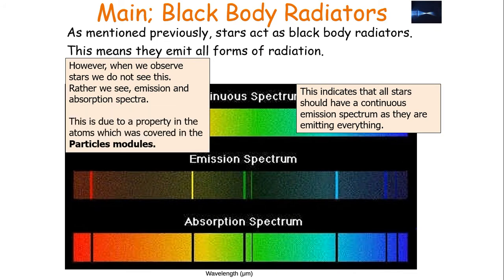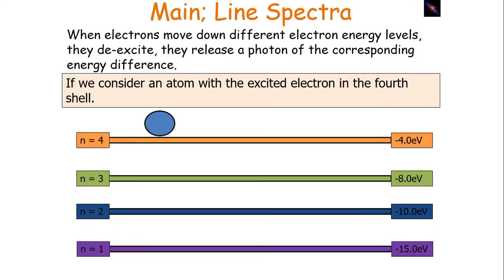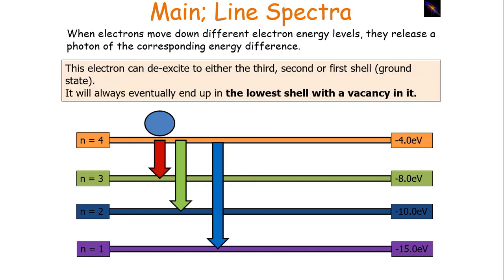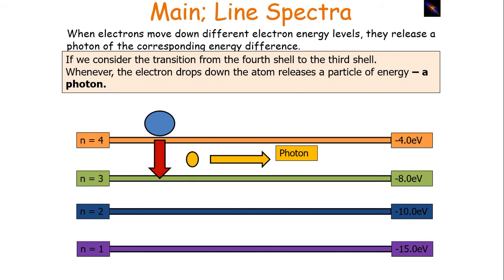This is due to a property in the atoms covered in the particles module. When electrons move down different electron energy levels, they de-excite and release a photon of the corresponding energy level difference. If we consider an atom with an excited electron in the fourth shell, electrons in atoms — including those in the atmosphere of stars — must occupy certain electron levels or shells. If it's in the fourth energy level, the electron can de-excite to either the third, second, or first shell. It will always eventually end up in the lowest shell with a vacancy. When the electron drops down, it releases a photon.